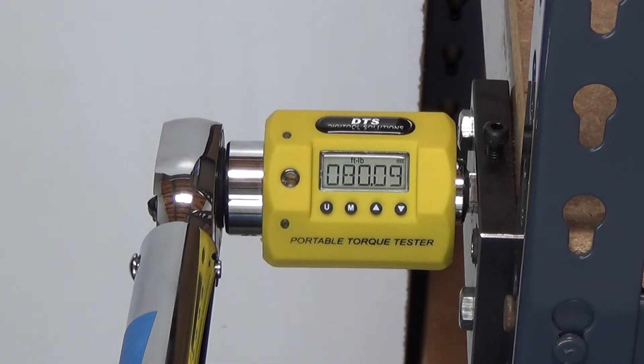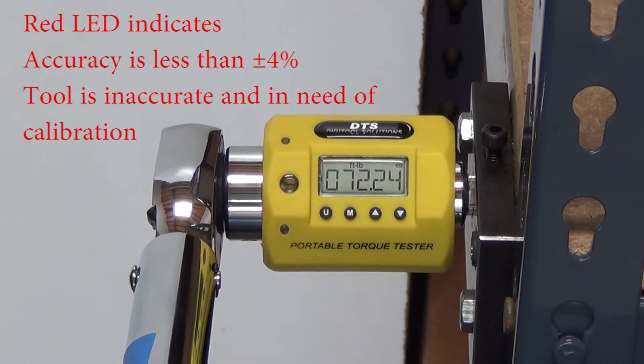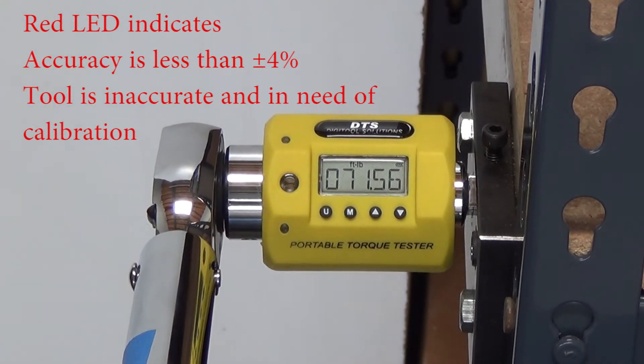Knowing whether or not your tool is within spec is a snap. The red LED indicates that you are not close. Your tool is definitely in need of calibration.